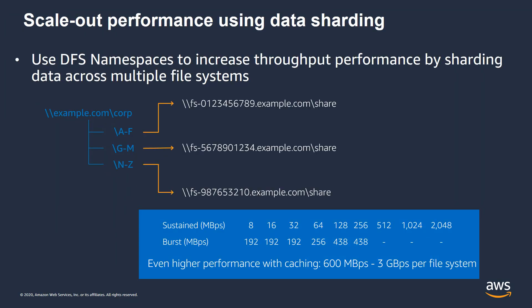Each of these file systems can have up to two gigabytes per second throughput, and in front of the Amazon FSx for Windows File Server file system there's a caching layer, which allows you to scale even higher — about up to three gigabytes per second per file system. With DFS, we can scale even higher by sharding the data across different indexes. For example, with a home folder namespace, users whose names start with A to F go to one file system, G to M go to a second file system, and the third set go to a third file system. Each can have up to two gigabytes per second throughput, so using DFS namespaces you can scale not just the capacity but also the throughput by partitioning the namespace.